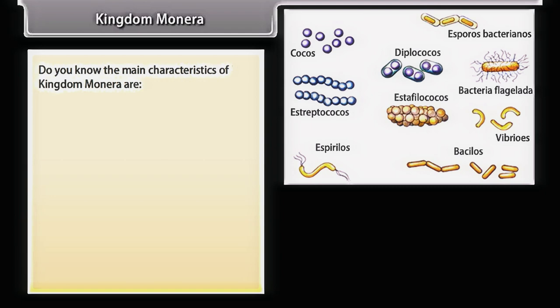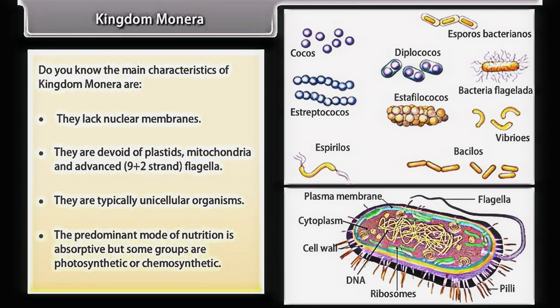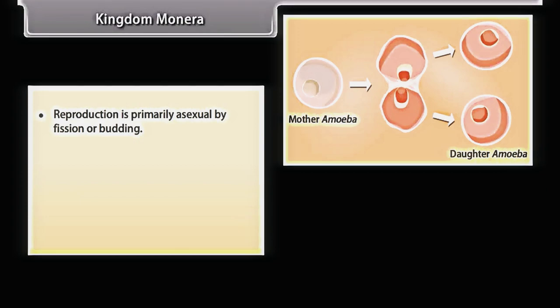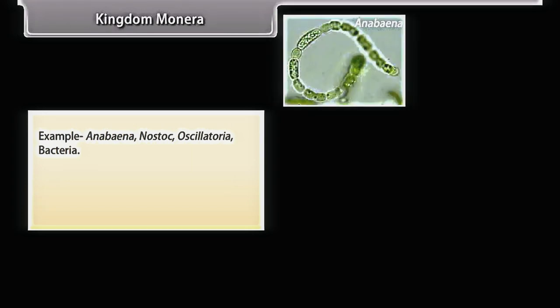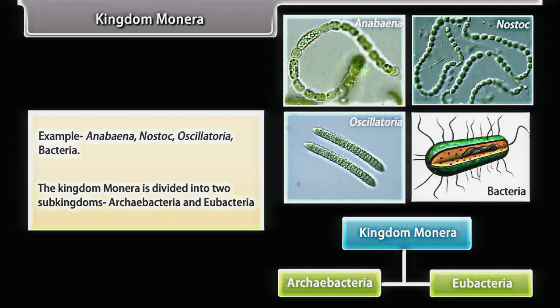The main characteristics of Kingdom Monera are that they lack nuclear membranes and are devoid of plastids, mitochondria, and advanced 9+2 strand flagella. They are typically unicellular organisms. The predominant mode of nutrition is absorptive, but some groups are photosynthetic or chemosynthetic. Reproduction is primarily asexual by fission or budding. Monera cells are microscopic and most bear a rigid cell wall. Examples include Anabaena, Nostoc, Oscillatoria, and Bacteria. Kingdom Monera is divided into two sub-kingdoms: Archaebacteria and Eubacteria.